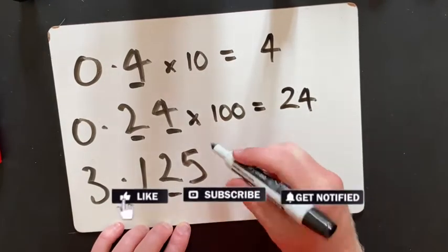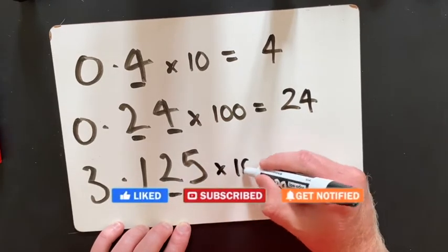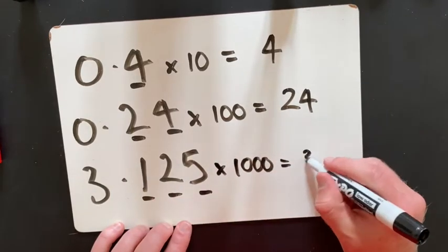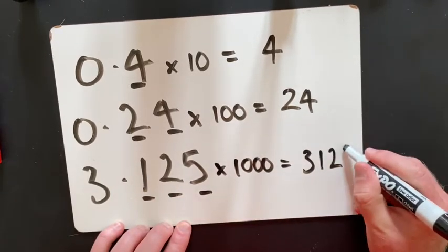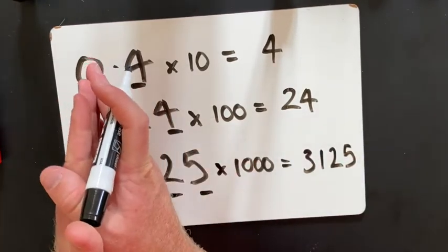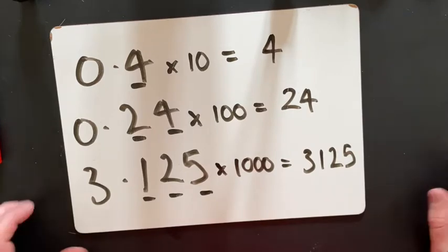3.125 has three decimal numbers, so I need to multiply that by 1000. And then that will give me 3125. So can you see how first I've changed all these numbers to be numbers that are not decimal numbers?